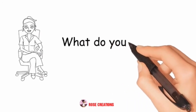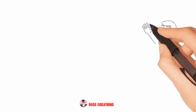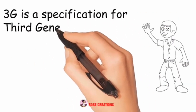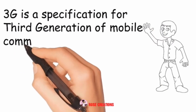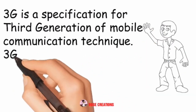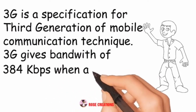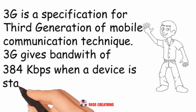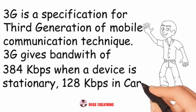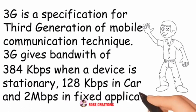What do you understand by 3G? 3G is a specification for the third generation of mobile communication technique. 3G gives bandwidth of 384 kbps when a device is stationary, 128 kbps in a car, and 2 Mbps in fixed applications.